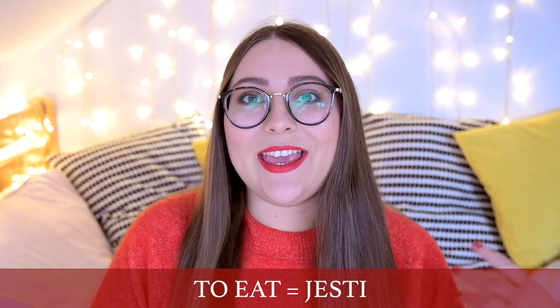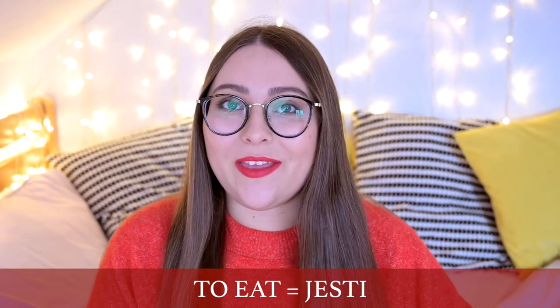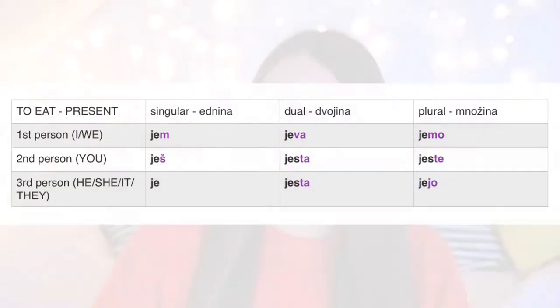By the end of the video you can tell me what you love to eat most over the holidays. Let's jump right in. First of all, 'to eat' in Slovenian is 'jesti'. In present tense: first person singular is 'jem', second person singular is 'ješ', third person singular is 'je'. First person dual is 'jeva', second person dual is 'jesta', third person dual is 'jesta'. First person plural is 'jemo', second person plural is 'jeste', and third person plural is 'jejo'.